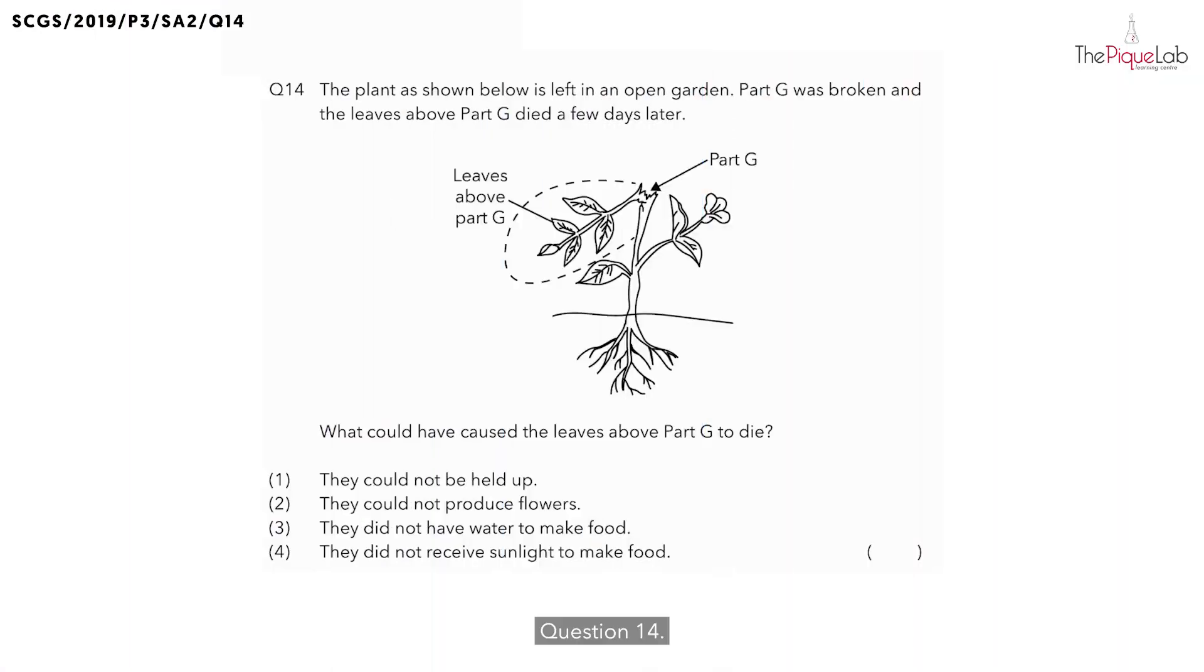Question 14. The plant as shown below is left in an open garden. They tell us that part G of this plant was broken and the leaves above part G are going to die a few days later. So they ask, what do you think could have caused the leaves above part G to die?